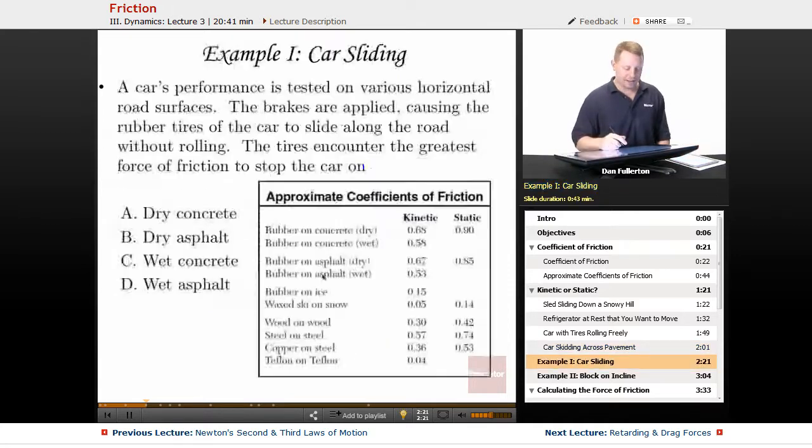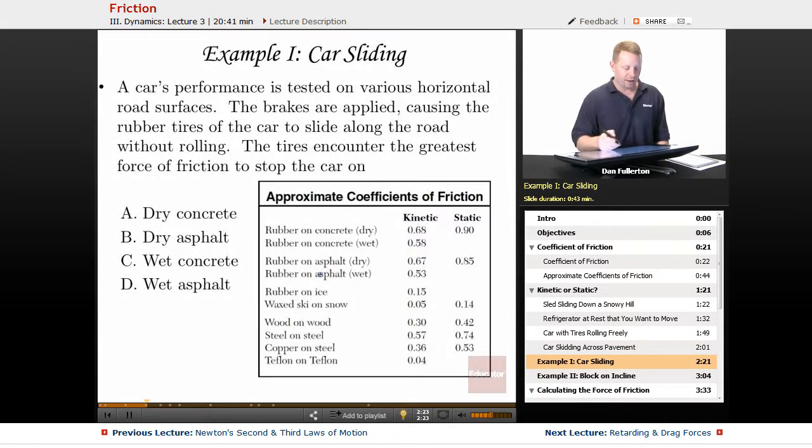Let's take the example of a car sliding. A car's performance is tested on various horizontal road surfaces. The brakes are applied, causing the rubber tires of the car to slide along the road without rolling. Without rolling. They're sliding.